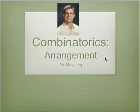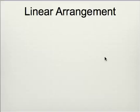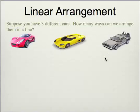We're going to talk about a couple different types of arrangement in this video. The first is linear arrangement. A basic example would be if you have three different cars, how many ways can you arrange them in a line? For example, a nice red Sportster, a yellow vehicle which is very economical, and the DeLorean from Back to the Future.